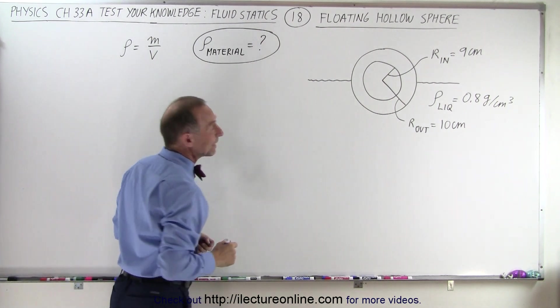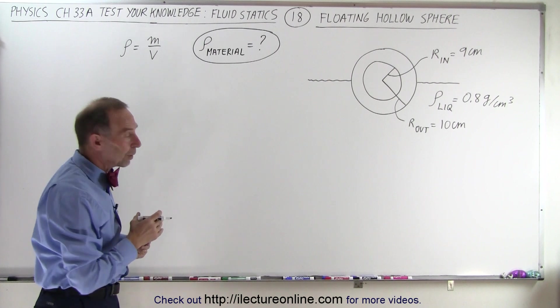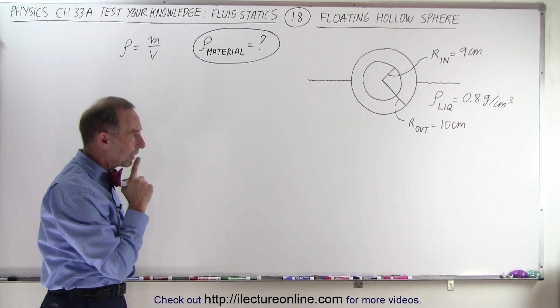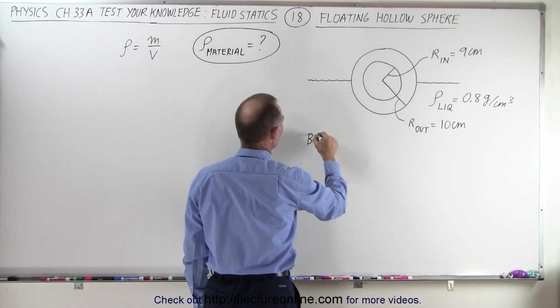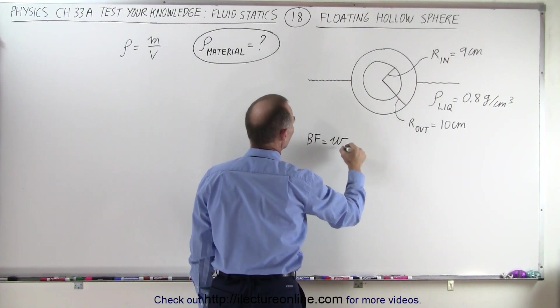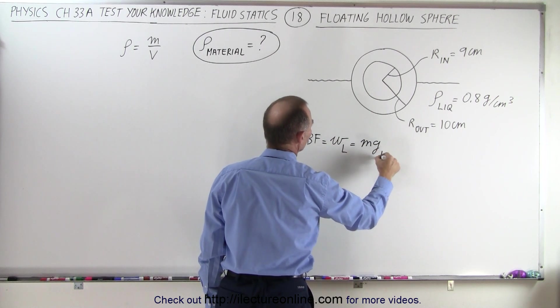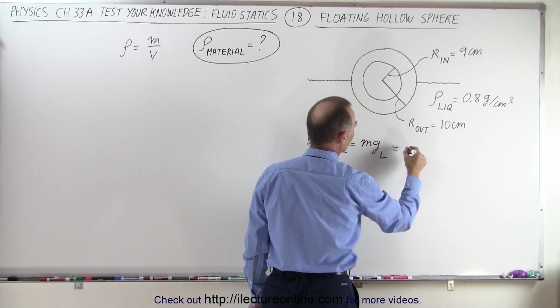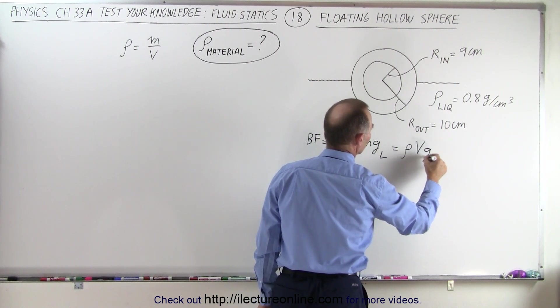The volume can be calculated quite readily, but the mass, we need to figure out the mass of the material. We can probably do that using the buoyancy force. The buoyancy force, by definition, is equal to the weight of the displaced liquid, which is equal to the mg of the displaced liquid, which is equal to the density times the volume times g of the displaced liquid.